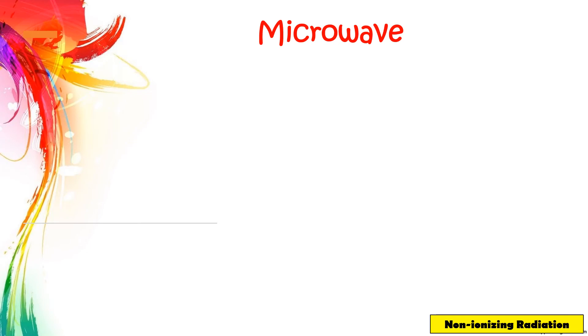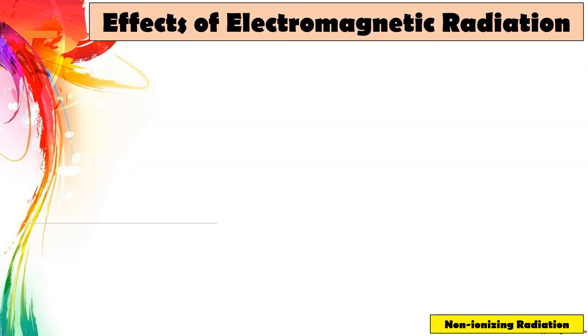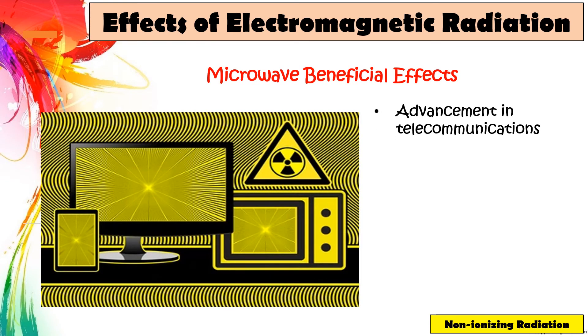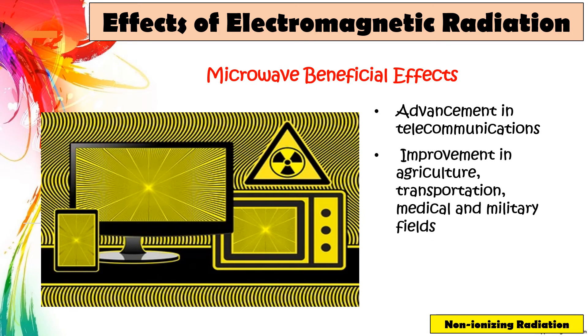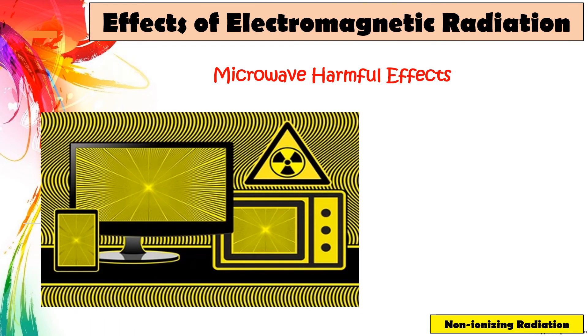Microwave ovens work because microwaves excite the water molecules and cause them to vibrate, generating heat and cooking the food. The beneficial effects of microwaves include advancement in telecommunications, improvement in agriculture, transportation, medical, and military fields, and fast and easy preparation of food. On the other hand, overexposure to microwaves can be harmful, causing temple burn and cataracts.